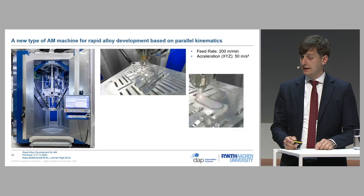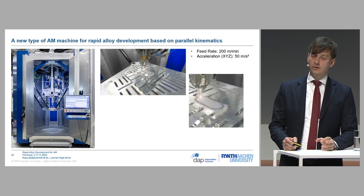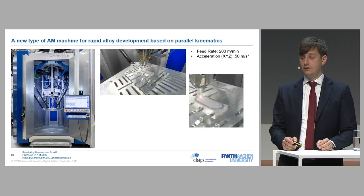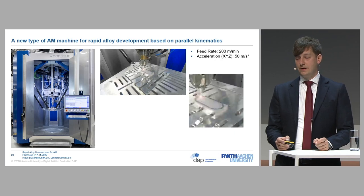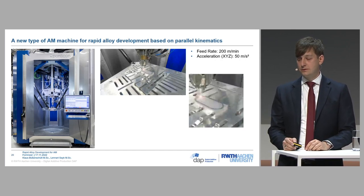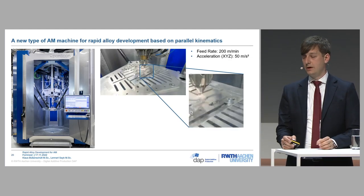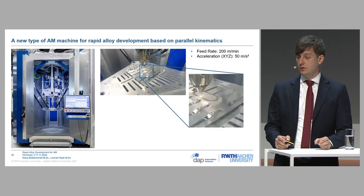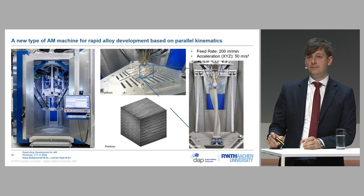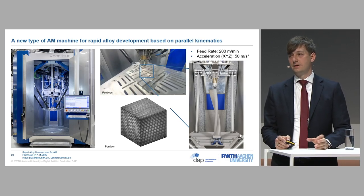This is a specially designed machine with a parallel kinematics system, which overcomes the limitations of conventional kinematics that cannot achieve the high feed rates required for the desired cooling rates. The parallel kinematic system allows feed rates up to 200 meters per minute and acceleration in all axes up to 50 meters per second squared. In the process video, powder is fed locally through the nozzle, melted inside the melt pool, and allows thin-wall structures and bulk material of individual compositions. Samples already printed on this machine include bulk material for investigation and a thin-walled aluminum structure.